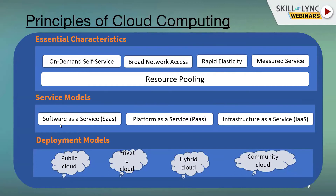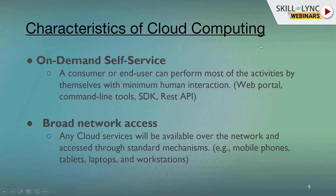These are the service models: software as a service, platform as a service, and infrastructure as a service. And the deployment models are: public cloud, private cloud, hybrid cloud, and community cloud. In the next slide, we will see the first topic — essential characteristics of cloud computing.